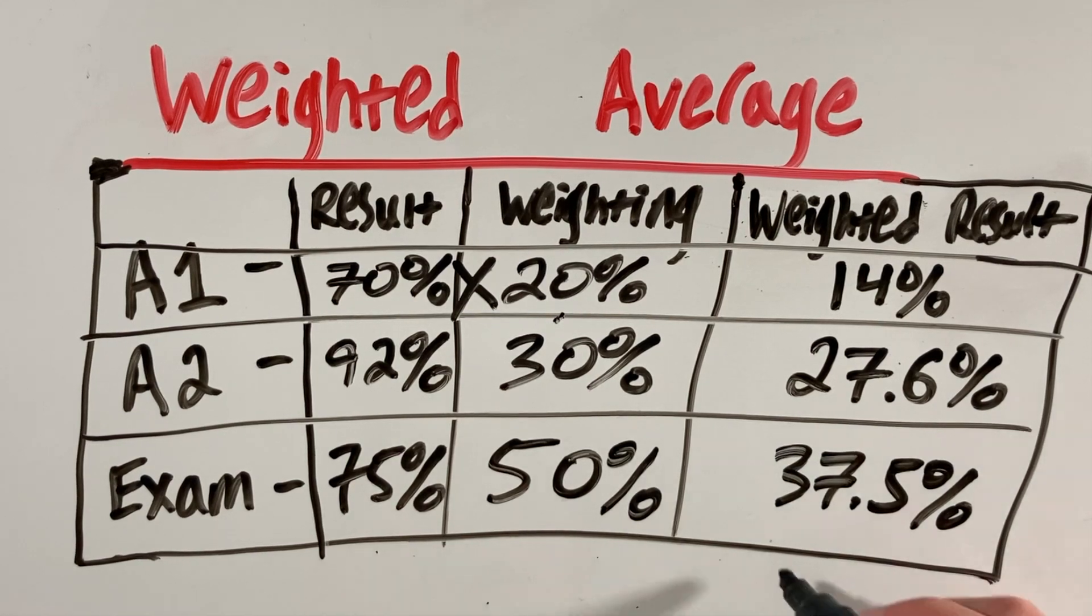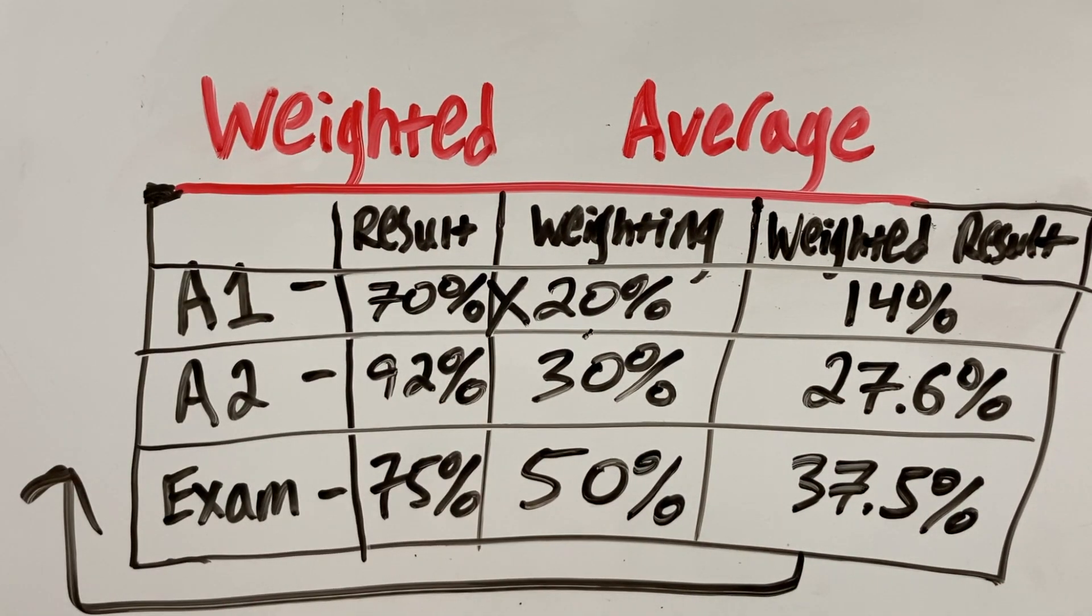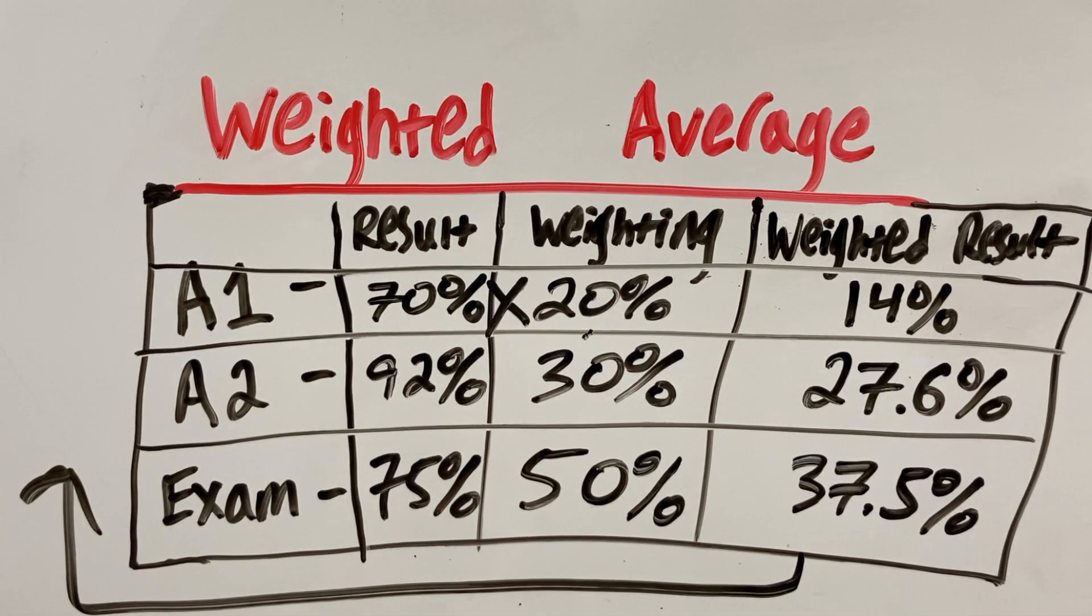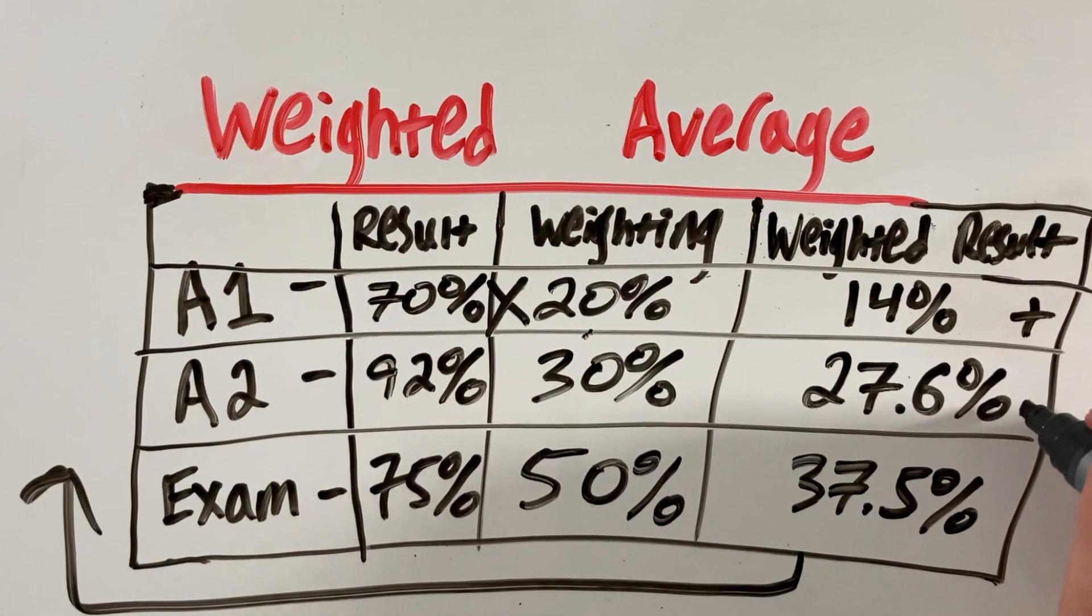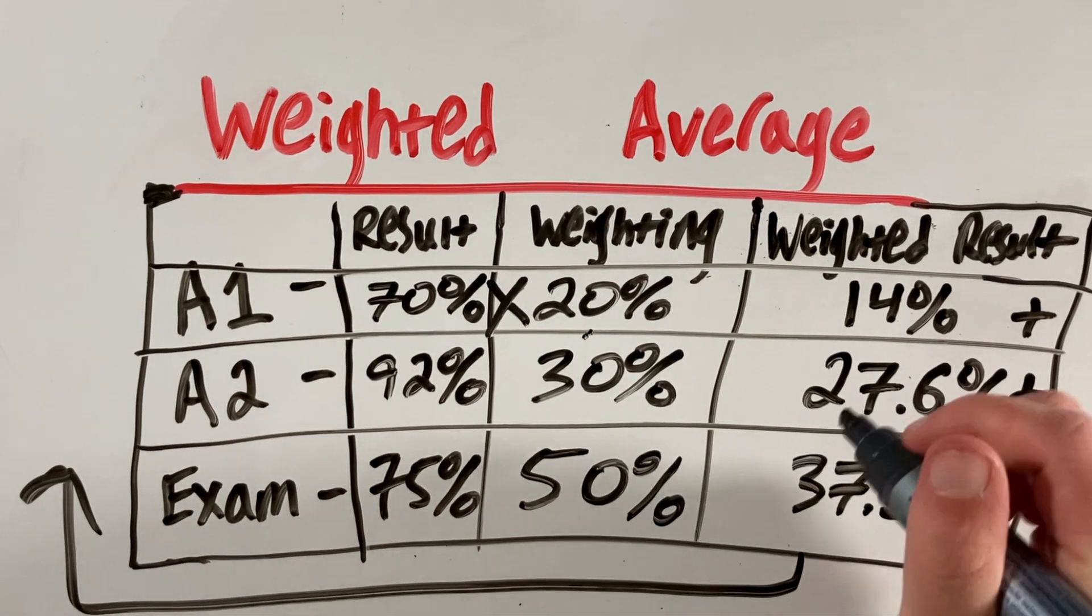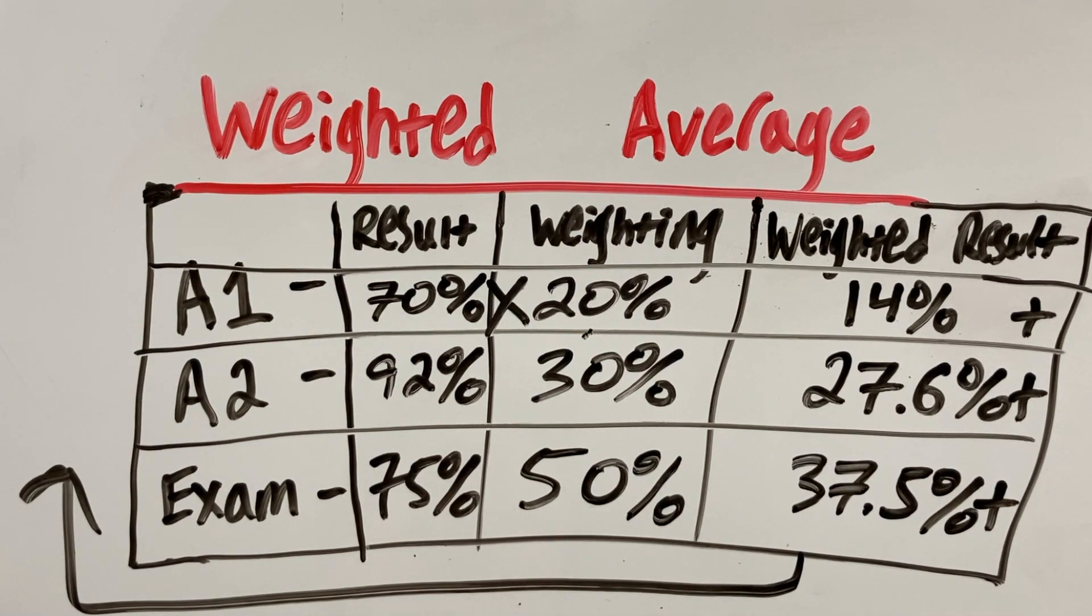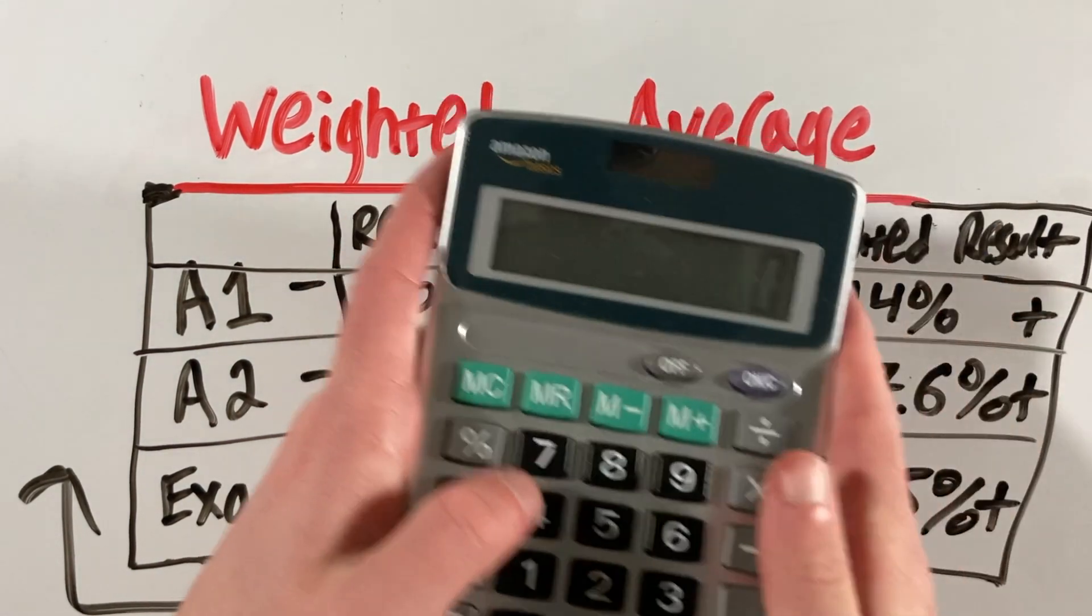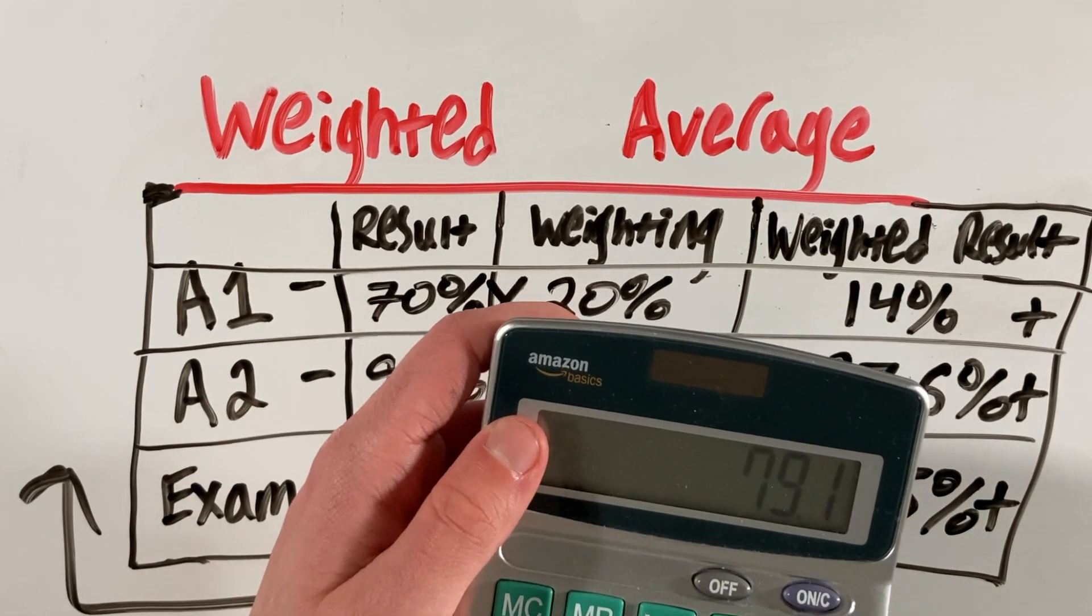Finally, to get our total weighted average, I'll just move everything over here so we have some space. We add the three up: 14% plus 27.6% plus 37.5%. If I do that on the calculator, we get 79.1.